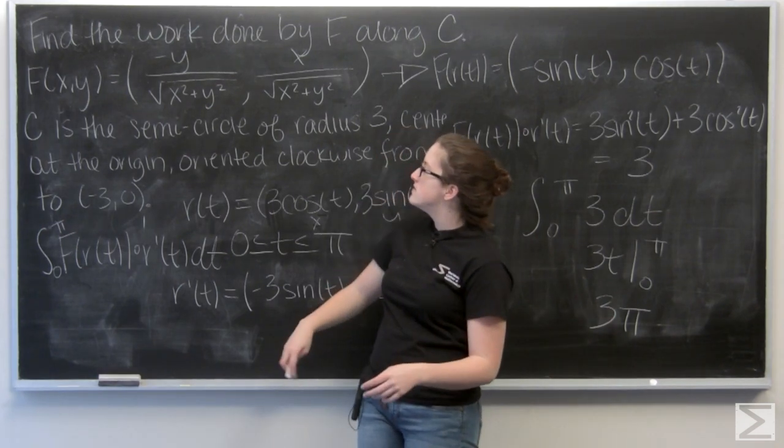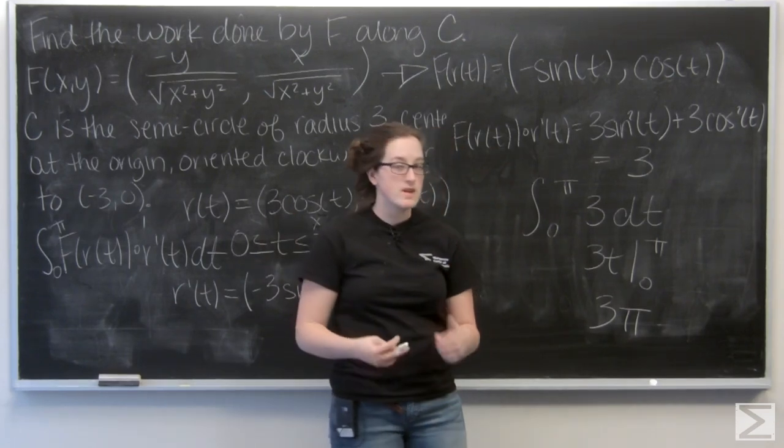So the work done by f along c is 3π. And let's call it joules. Say my units are meters, forces are newtons, and I'm good to go.